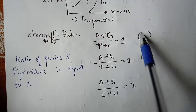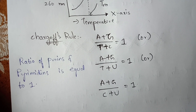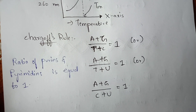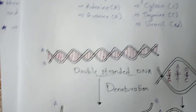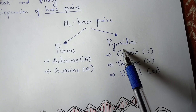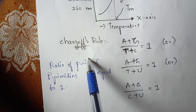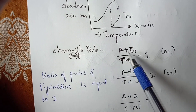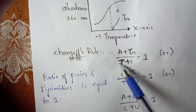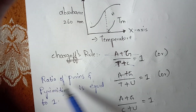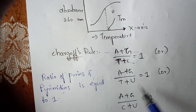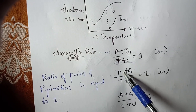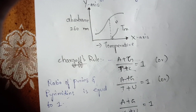Next, what is meant by Chargaff's rule? Simply stated: (A + G) / (T + C) = 1. To explain more deeply, the ratio of purines to pyrimidines equals one. Purines consist of adenine and guanine, whereas pyrimidines consist of cytosine, thymine, and uracil. This ratio of purines to pyrimidines being equal to one is known as Chargaff's rule.